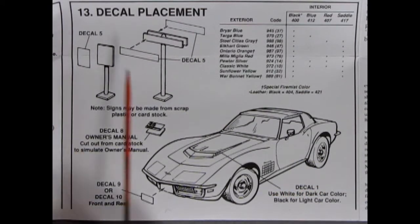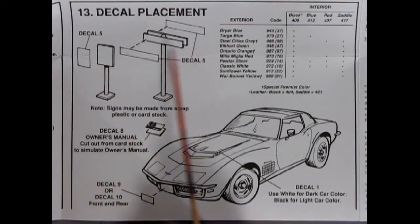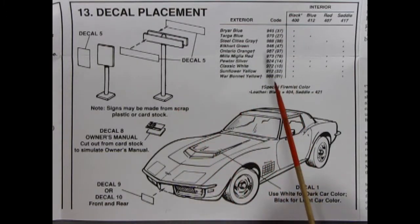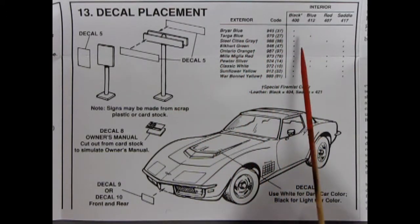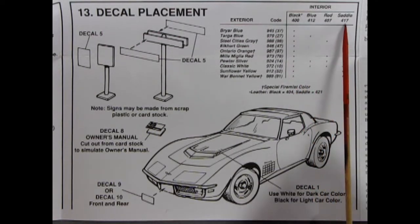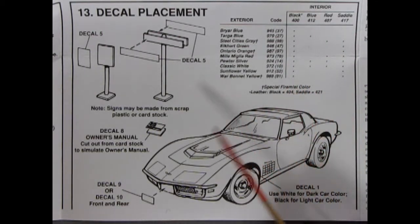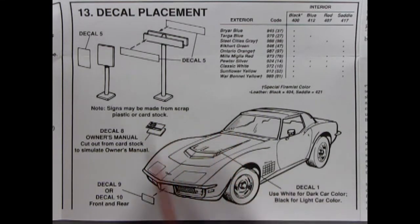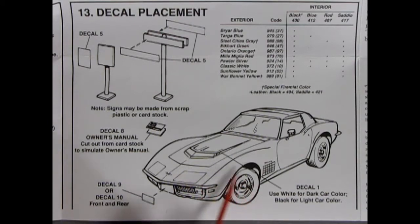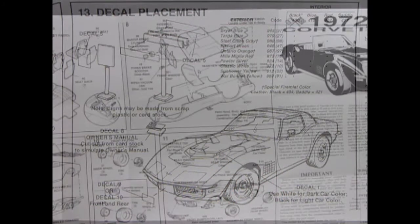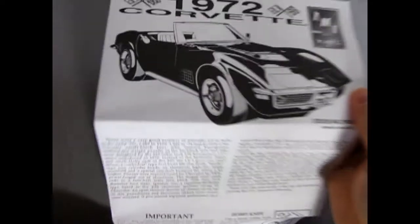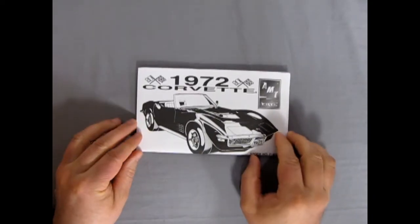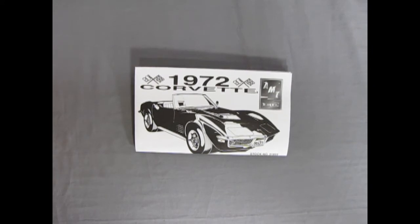Step 12 shows our rectangular exhaust tips going on to the back. Paint the recessed areas dark gray or flat black. We've got our nice bumpers going on and our tail lights. It says to paint the centers white inside lights only, just these two for our backup lights. Step 13 is our decal placement. We get some of these signs which were in the 70 to 72 Corvette kits. Here's all our exterior colors and our interiors to match them up: black, blue, red and saddle interiors. A decal for our owner's manual, it says cut out from cardstock to simulate owner's manual. Then we've got either decal 9 or 10 for our license plate and our LT1 stripes. That completes our look at our 1972 Corvette instruction sheets and I really want to check out those gray plastic components.